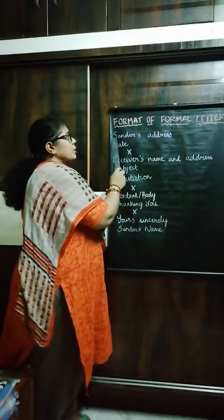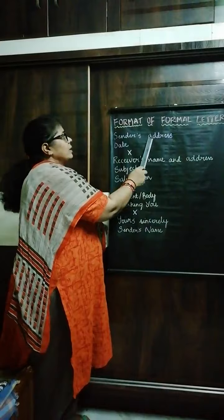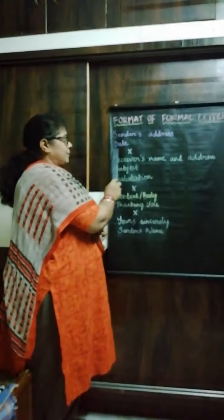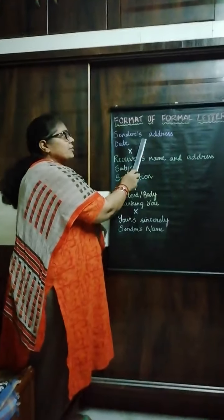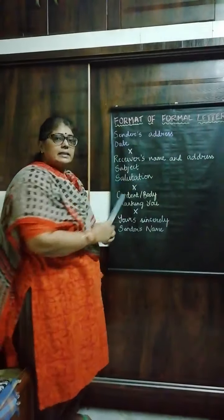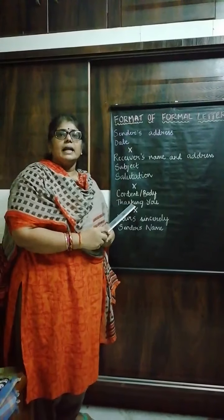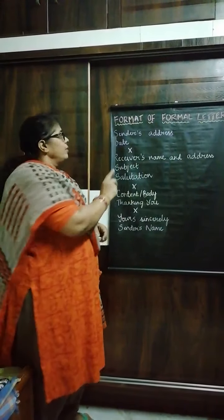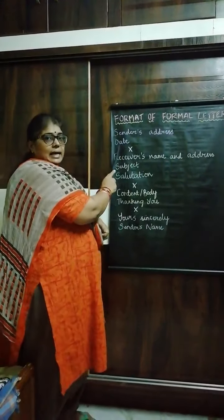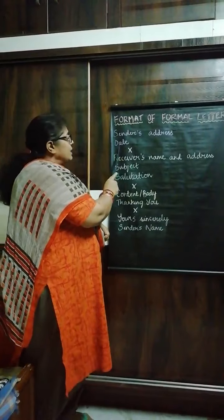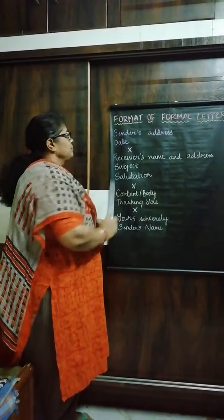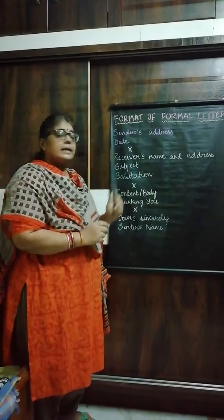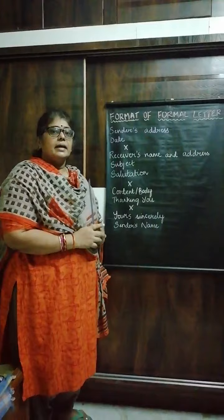Here you will write your name, address, and date. When you complete writing the name and address, without leaving any line, you will write the date. Now, can you see a cross mark here, children? Wherever there is a cross mark, that means you have to leave a line blank.